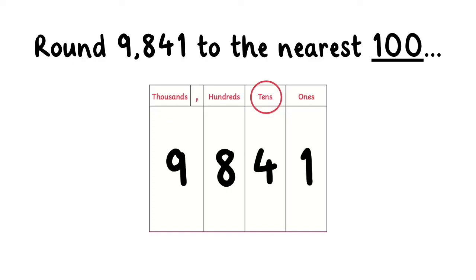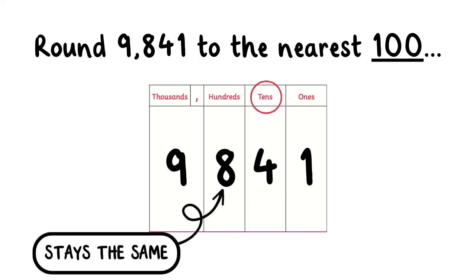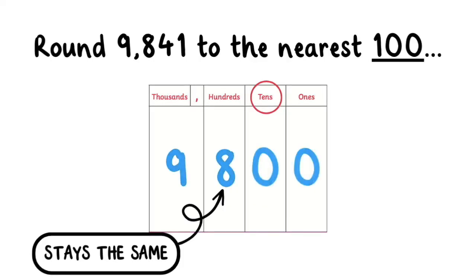Since the tenths digit is 4, which is less than 5, we keep the hundredths digit the same. Therefore, 9841 rounded to the nearest hundredth would be 9,800.